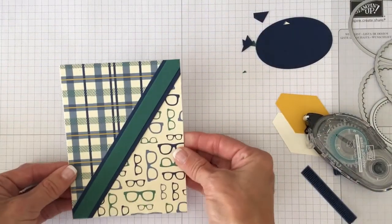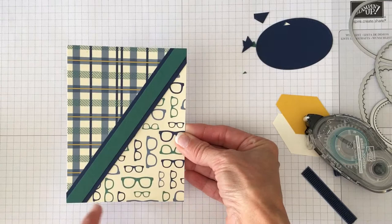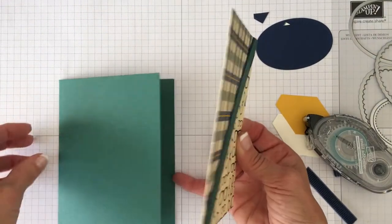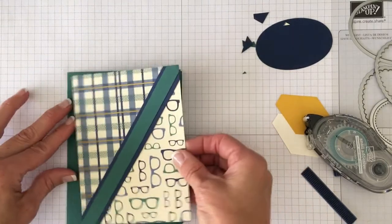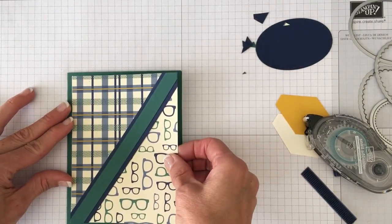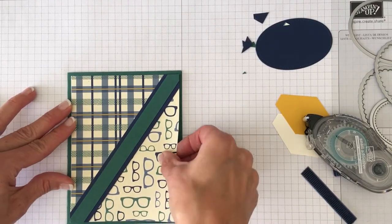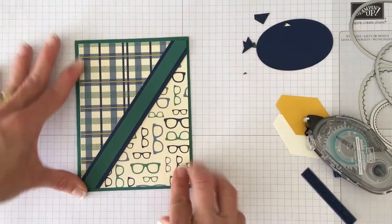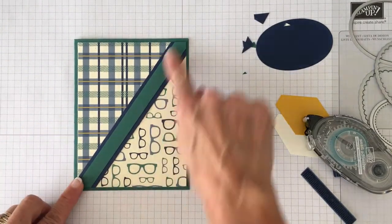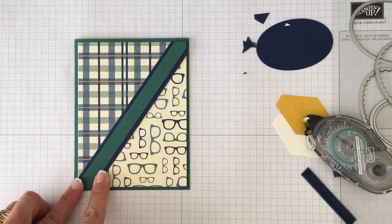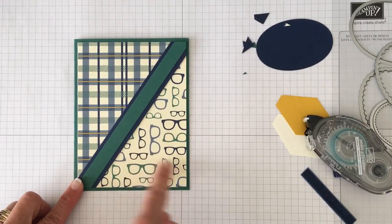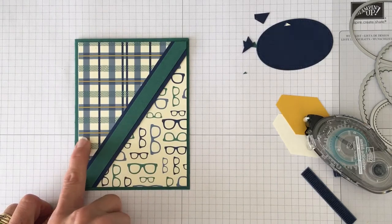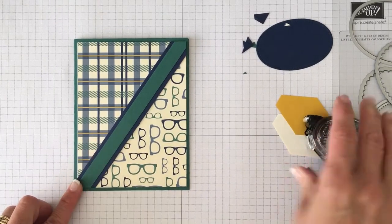So now we have this panel that is perfectly trimmed to fit onto our A2 size card. So I'm going to put this onto my Tranquil Tide card base and we have a really nice color contrast between the Tranquil Tide and the Night of Navy and it's all in these different patterns in the designer series paper.